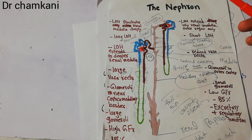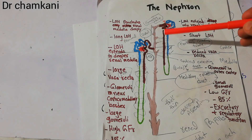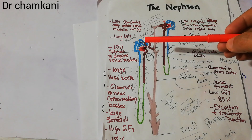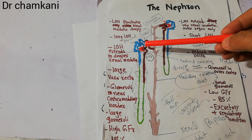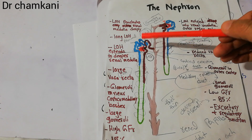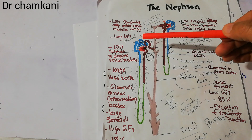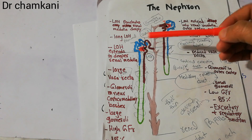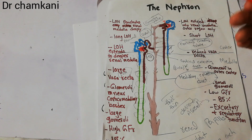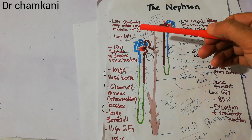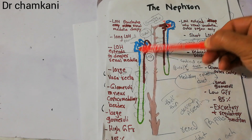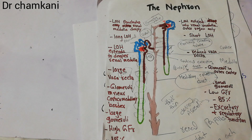Today in this lecture we are going to start discussing the reabsorption and secretion of electrolytes along the different segments of nephrons. We know that nephrons have different segments: the proximal tubule, loop of Henle, distal tubule, and then collecting ducts.